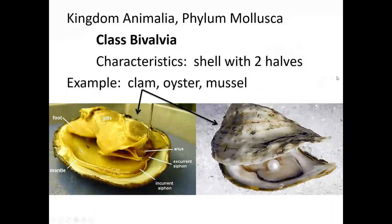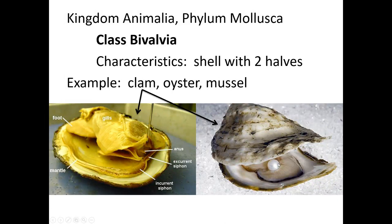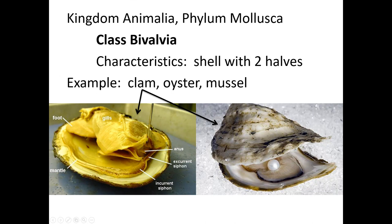Next up, bivalves — called that because they have two shells. This includes clams, scallops, oysters, and mussels — things that can make pearls. They are gill breathers and also use their gills to help them feed. You've probably picked up their shells on a beach; they can live in freshwater too. Zebra mussels are currently a major invasive species in Texas lakes.